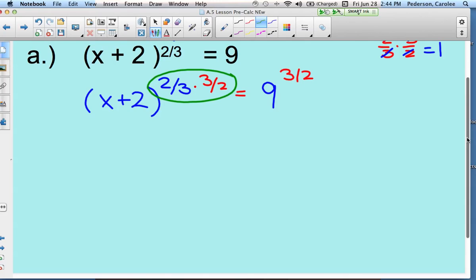So we're left with, on the left side, x plus two. Again, the two and the two cancel, the three and the three cancel.